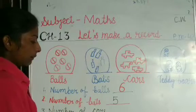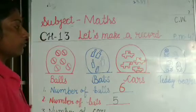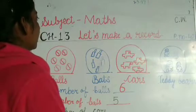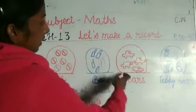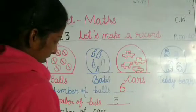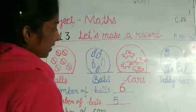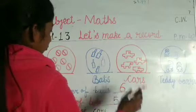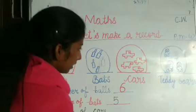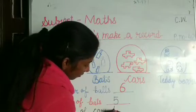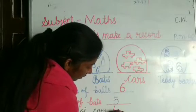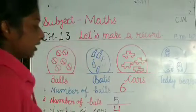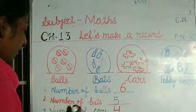Next: number of cars. Let's count the cars — one, two, three, four. Cars are four. Number of cars is four.